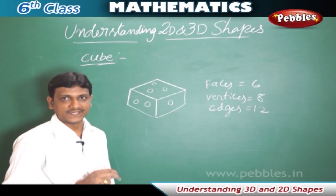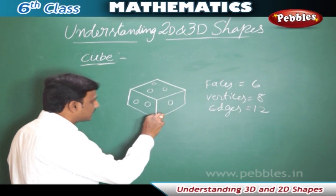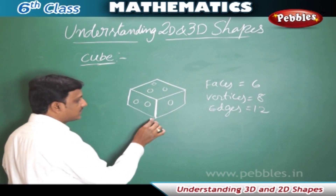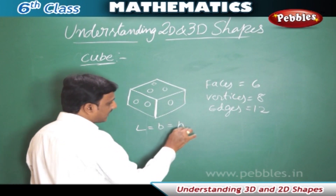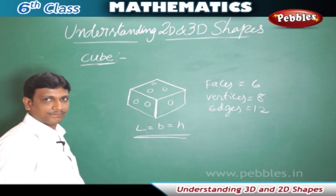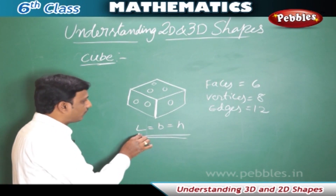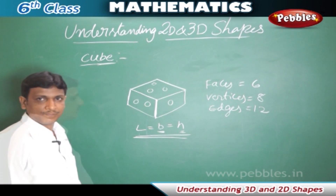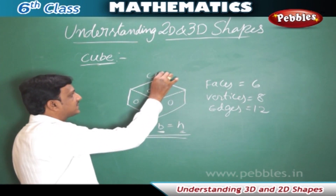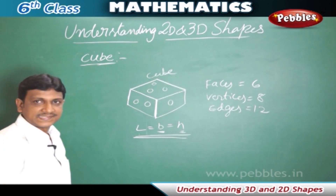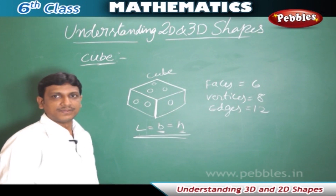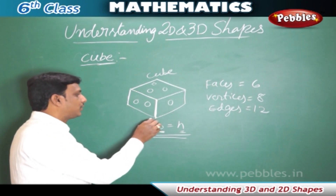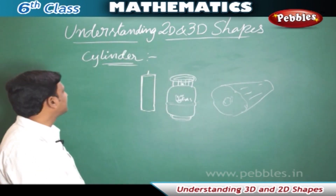So what is the difference between a cube and a cuboid? The main difference is that a cube has length, breadth, and height all equal to each other. When these three values are equal, the shape is called a cube. In a cuboid, however, the length, breadth, and height are of different values. That is the main difference between a cube and a cuboid.